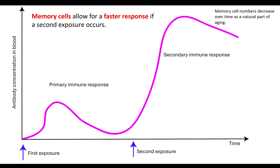As the phagocytes come along and engulf and digest the pathogen along with the antibodies, our antibody concentration decreases. The fact that we had that clonal expansion resulted in us ending up with memory cells. Our memory cells allow for a faster response when we have this secondary exposure to the same pathogen, which leads to our secondary immune response.